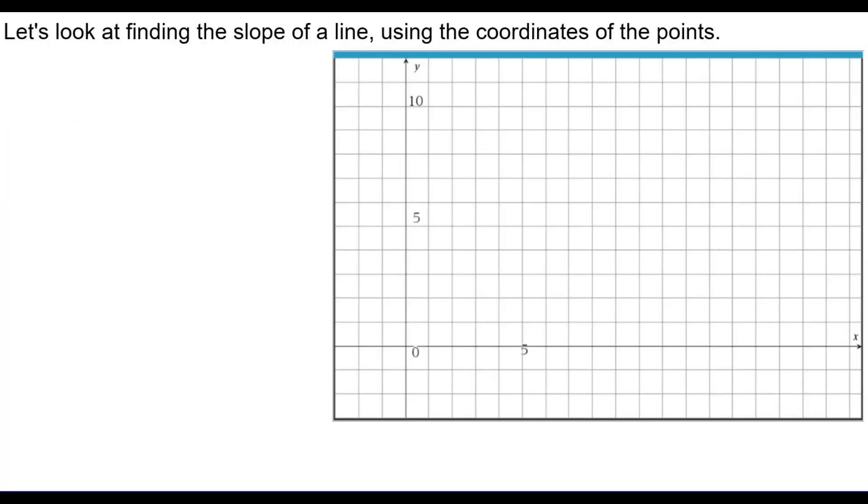First of all, let's look at finding the slope of a line using the coordinates of the points with specific numbers. For example, find the slope of the line that contains the points (1,2) and (9,8).